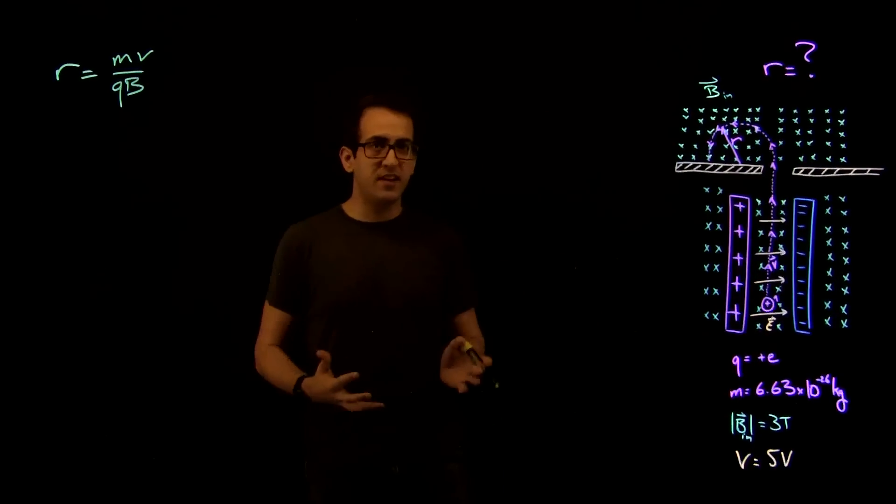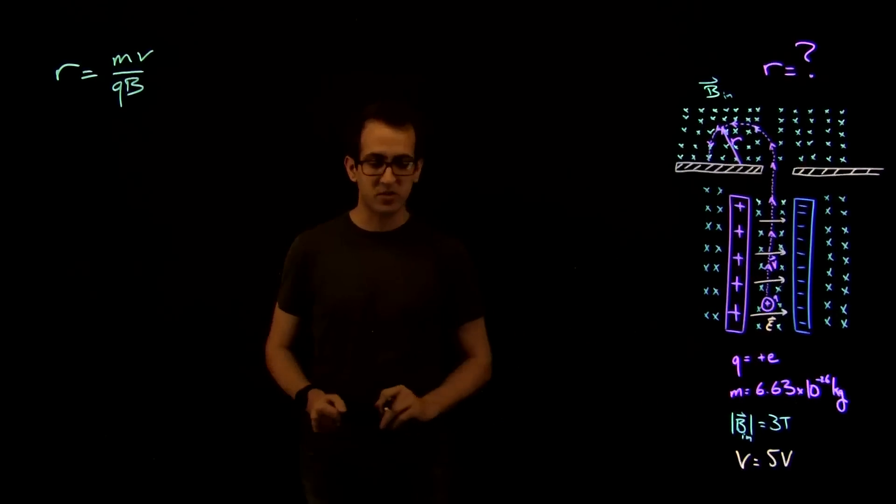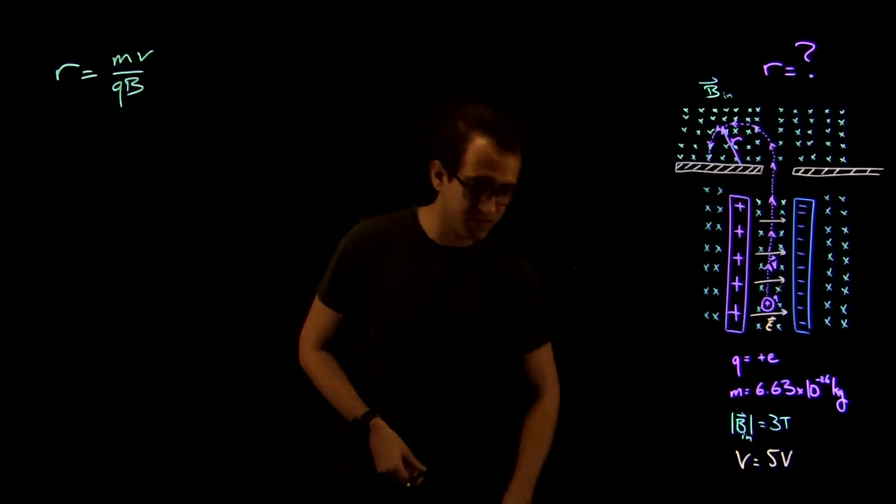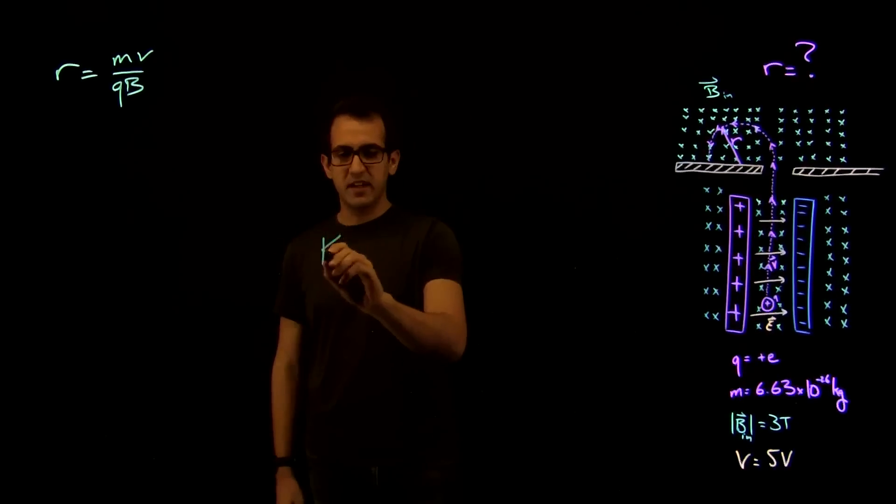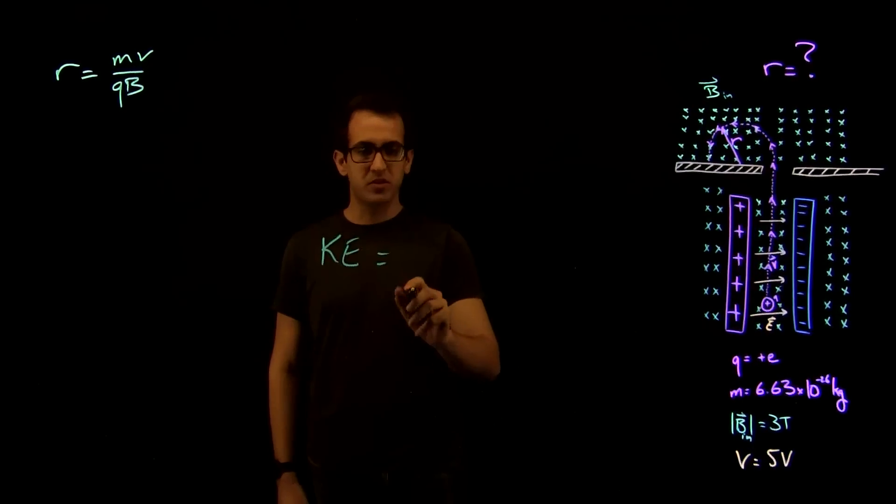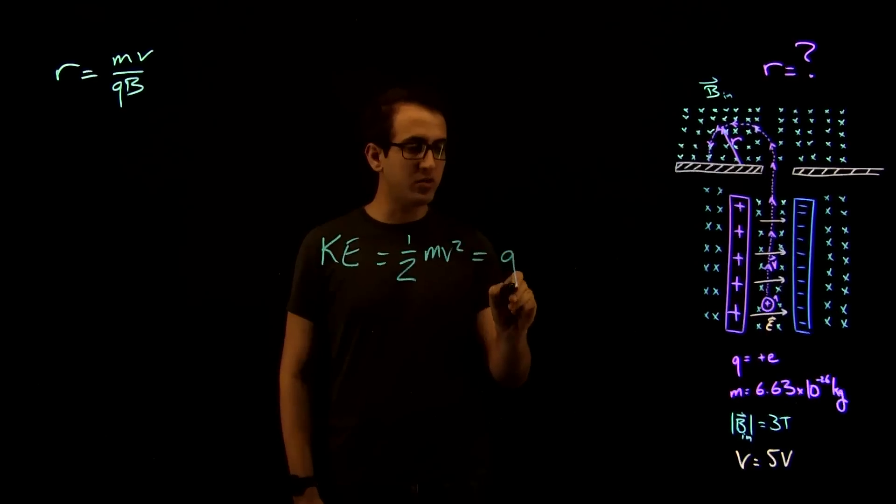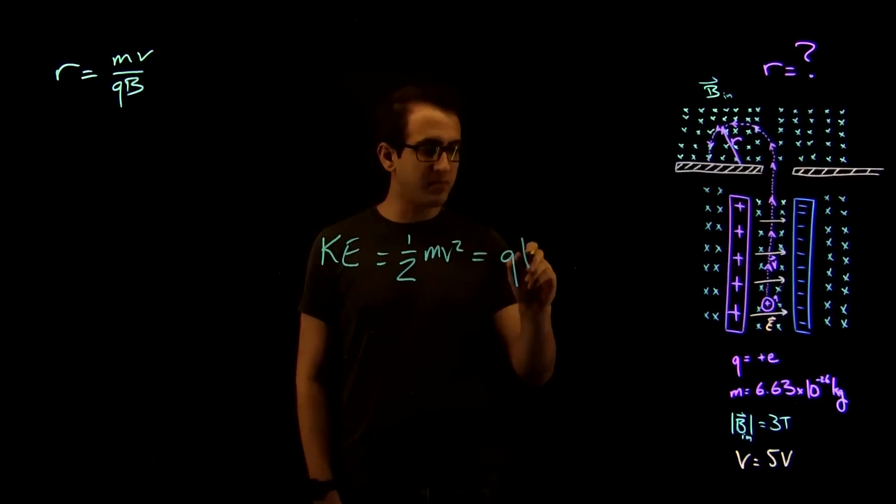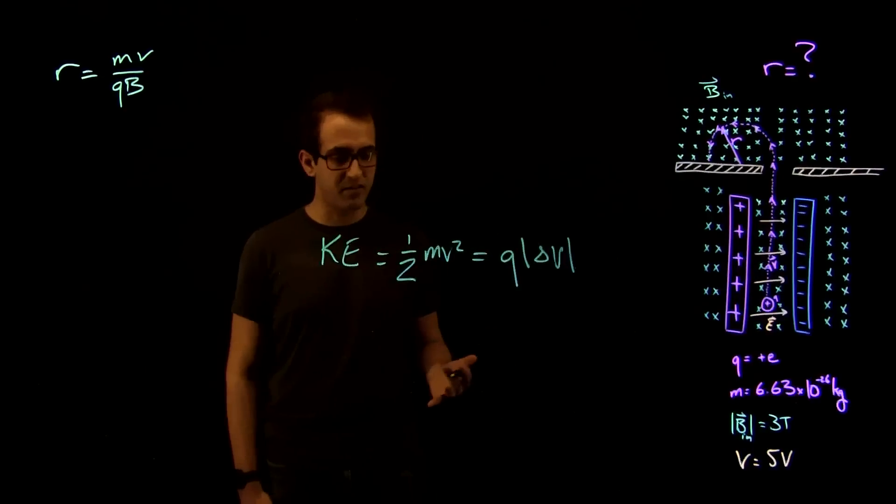So we need to find that using kinetic energy. We know it's accelerated through a potential of 5 volts, so that'll be what we need to do. We need to account for that. So what we know is that the kinetic energy is equal to 1 half MV squared, which is equal to Q, the charge, times delta V, the potential that's accelerated through.